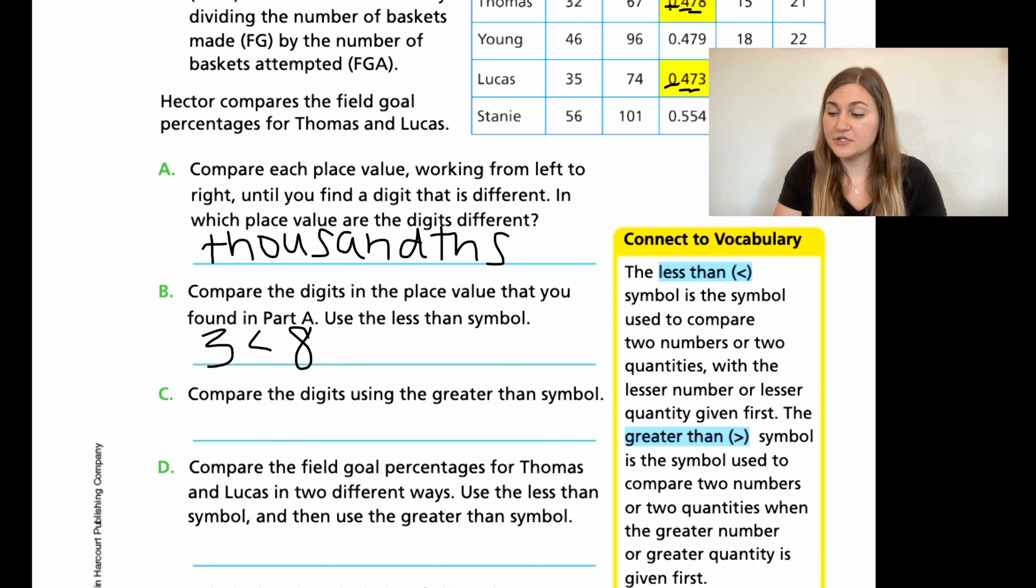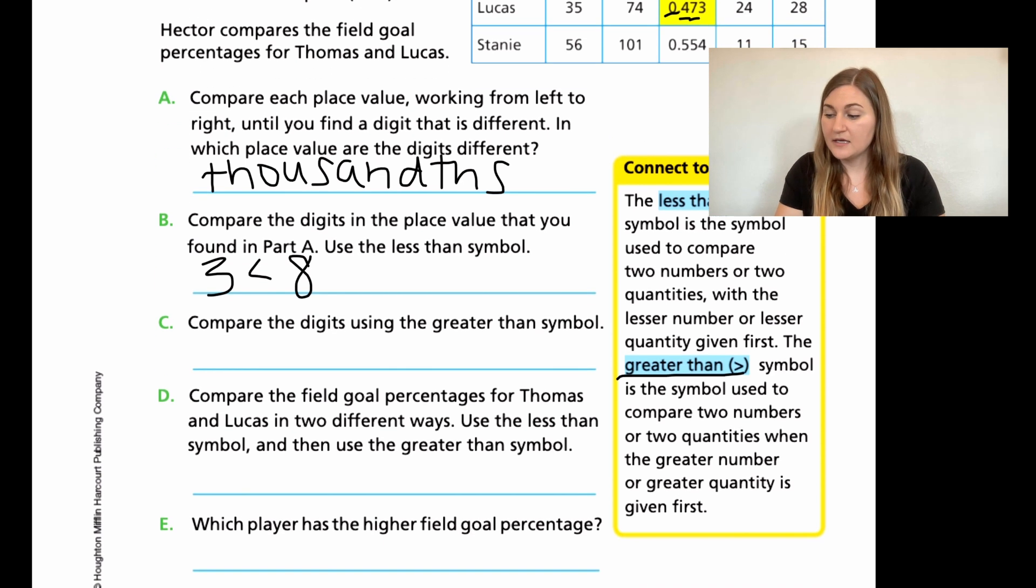Then it's the opposite in C. Now compare the digits using the greater than symbol. If you look down in the next blue highlight here, it says greater than is the other way. So we would need to flip the numbers so that when we read it, it would be correct. So we would say eight now is greater than three. Both are correct. It just depends on which symbol you're using. You have to make sure that the number is on the right side. Remember, your bigger number is always with the open mouth, right? The bigger section with the bigger number and the smaller section with the smaller number.